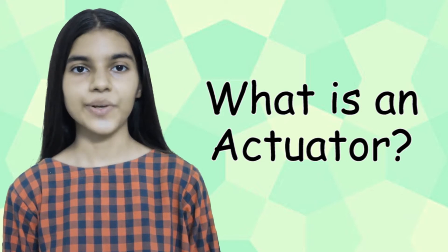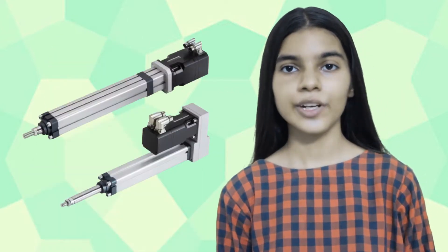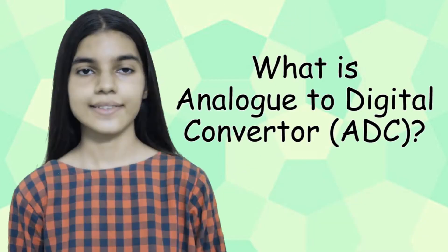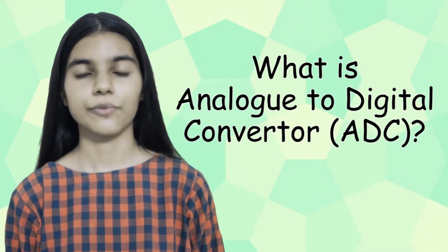What is an actuator? An actuator is a mechanical device such as a motor, which is used to control devices. What is an analog-to-digital converter (ADC)? This device is responsible for converting analog physical signals from external surroundings to digital signals that can be processed by a computer.